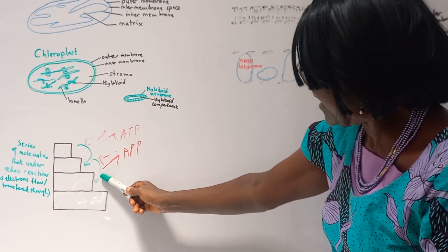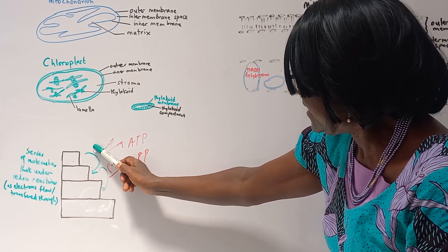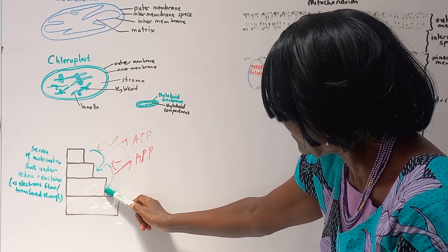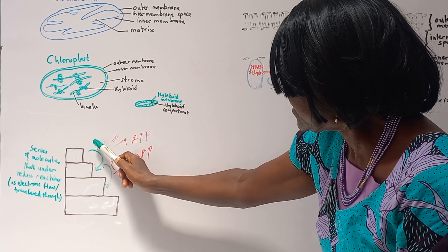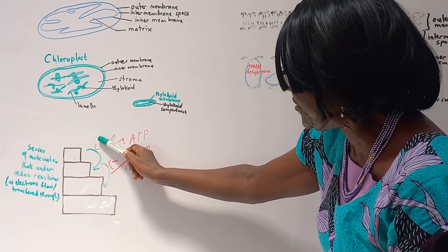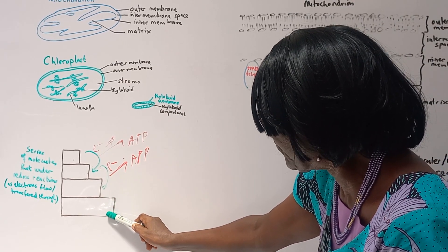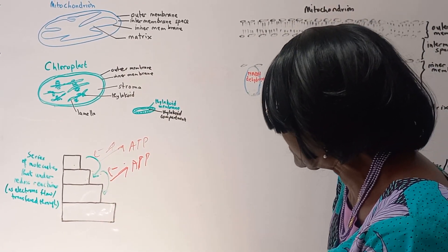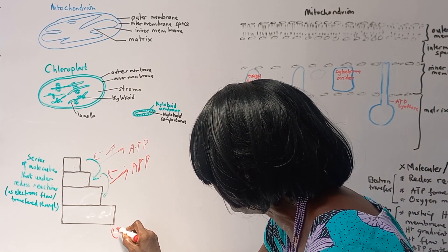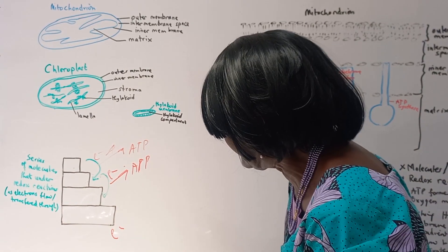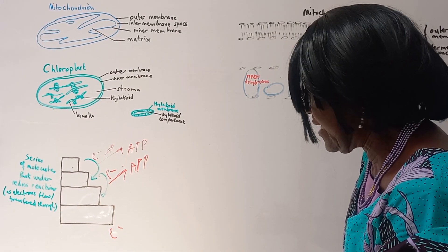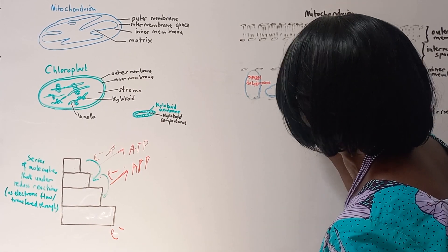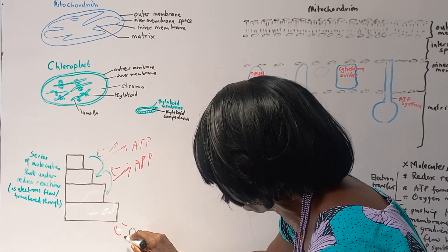Looking at the system: as the electron moves from one molecule to another, the electrons come in with high energy. By the time they have gone through a series of molecules, the electrons have become low in energy. Then, to mop up the electrons, oxygen in the system will absorb them.